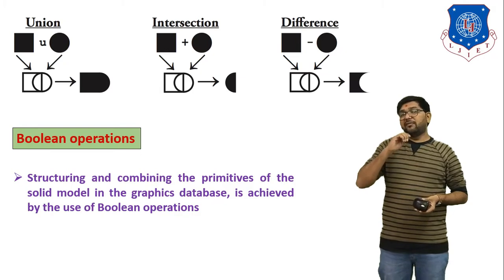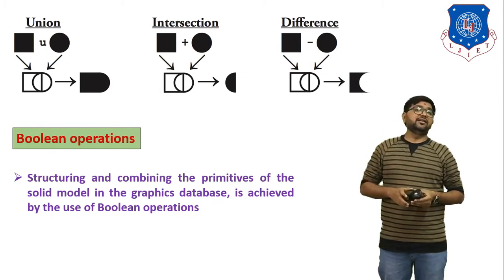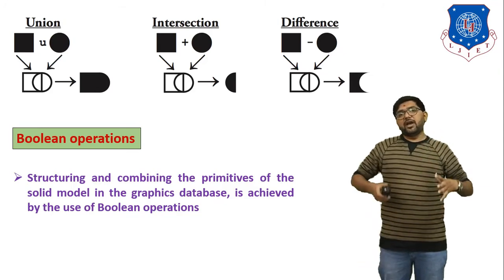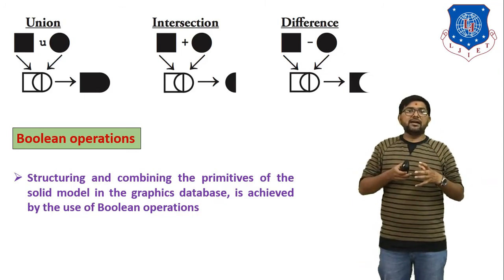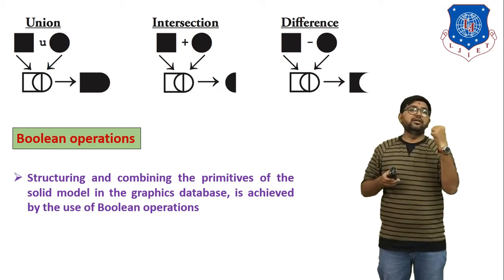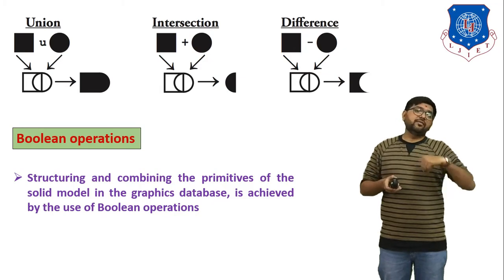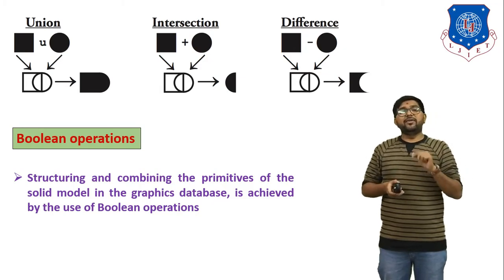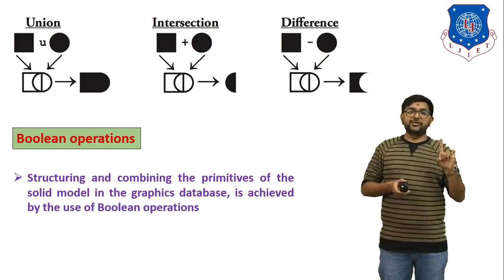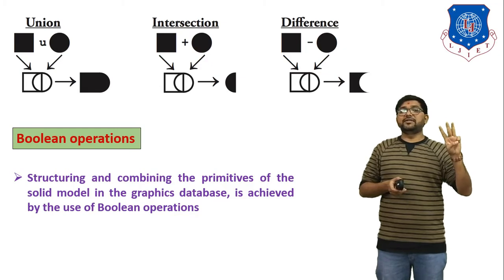Next is the Boolean operation. In CSG, we discuss three Boolean operations. If we have to combine two objects, reduce one object from another, or subtract one object from another, we use Boolean operations. There are three types: the first is union, the second is intersection, and the third is difference.